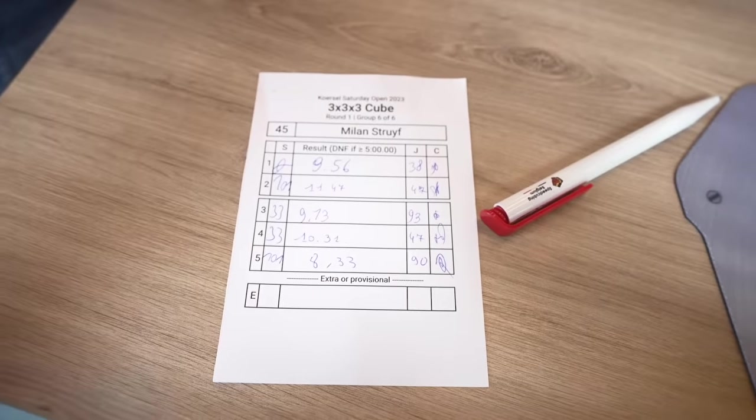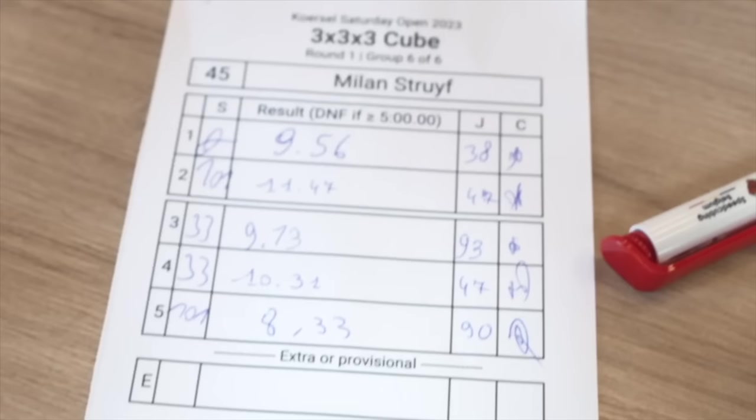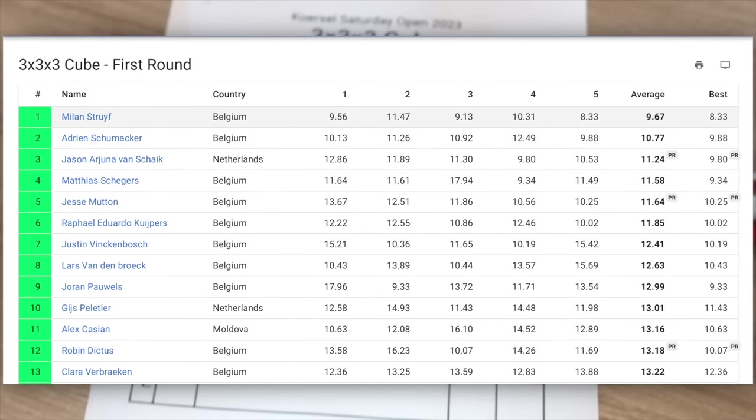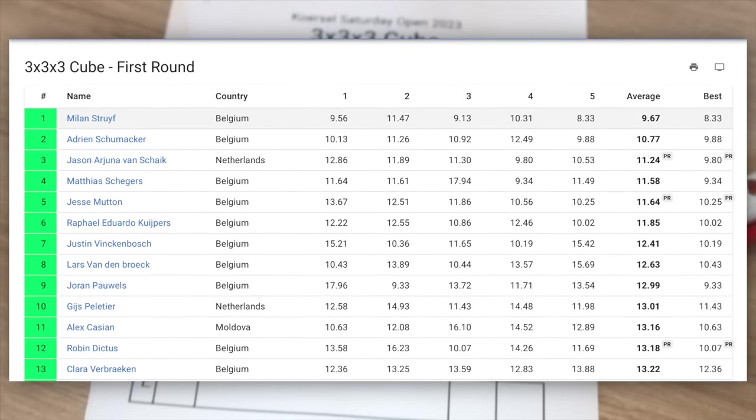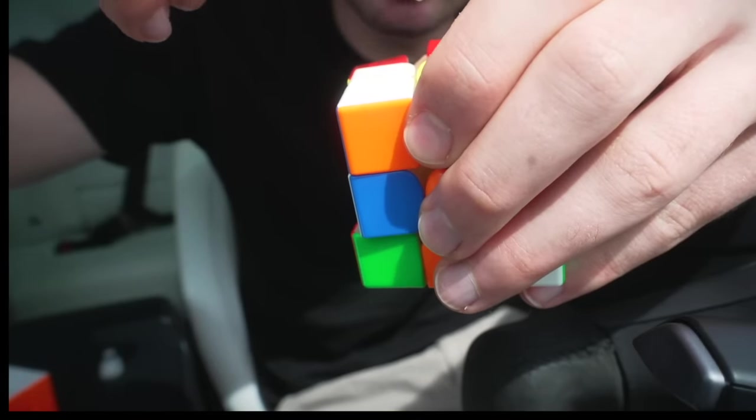But on my scorecard you can see that besides the 8.3 I don't really have a really good solve which meant that the average was 9.6 which surprisingly enough was good enough to win that round. Since I was getting some lockups during the first round I decided to slow my cube down a bit.